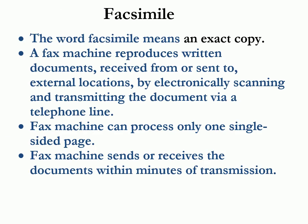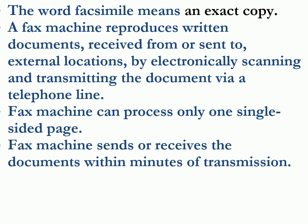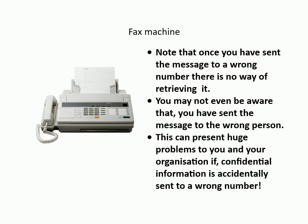Facsimile — the word facsimile means an exact copy. A fax machine reproduces written documents received from or sent to external locations by electronically scanning and transmitting the document via a telephone line. A fax machine can process only one single-sided page and sends or receives documents within minutes of transmission. Note that once you have sent a message to a wrong number, there is no way of retrieving it — you may not even be aware you sent it to the wrong person, which can present huge problems if confidential information is accidentally sent to a wrong number.